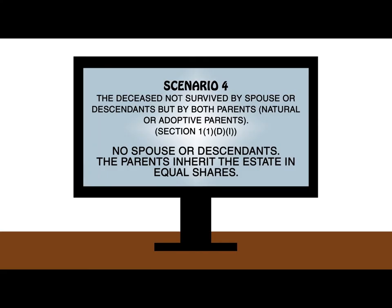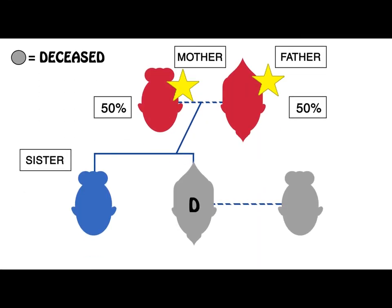In scenario 4, we have a situation where the deceased is not survived by a spouse or descendants, but is survived by both parents. Where the deceased leaves no spouse or descendants but is survived by both parents, those parents will inherit in equal shares. The parents can be biological, adoptive, or commissioning parents in a surrogacy arrangement. If both parents of the deceased are alive, all other collateral relations of the deceased — such as a brother or sister — are excluded from inheriting. In this example, the deceased's wife has predeceased him. He is survived by his mother, his father and his sister. His mother and father will therefore inherit his estate in equal shares, as he does not have a spouse or descendants.